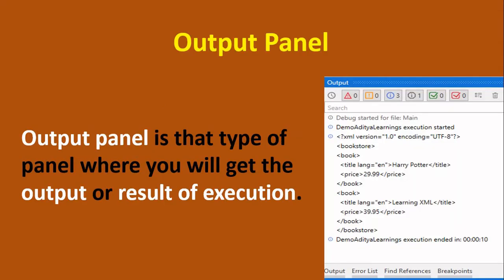Firstly, what is an output panel? The output panel is a panel where we get the output or the result of execution. It will basically consist of the execution start time and when the execution started — you can see it here. It shows us the execution time, the time taken to complete the end-to-end process.